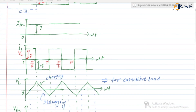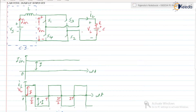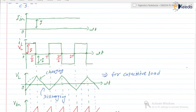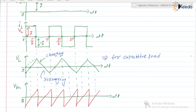For continuous cycles, V_L will start from negative. When S1 and S2 are in the on state, the positive of V_in is connected to the positive of V_L and negative of V_in to the negative of V_L, so V_L equals V_in. For continuous cycles, V_in goes from negative to positive. The capacitor continues charging.